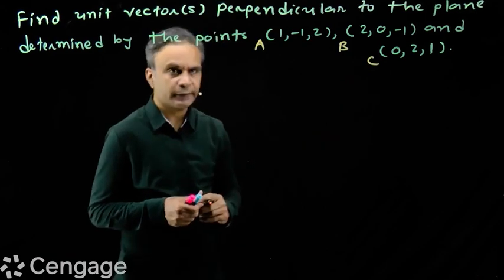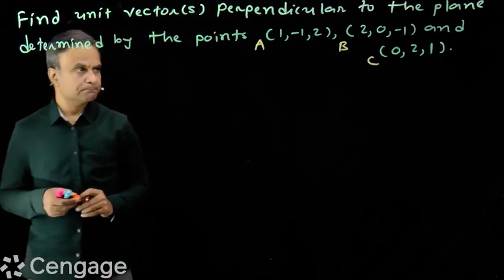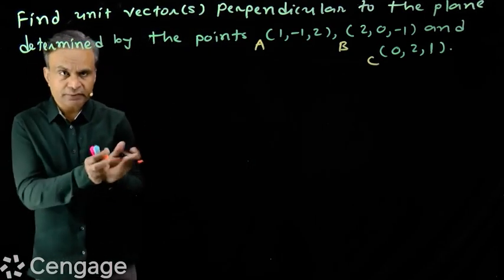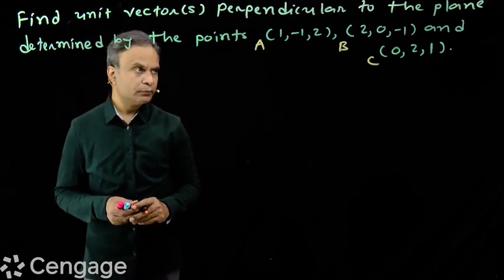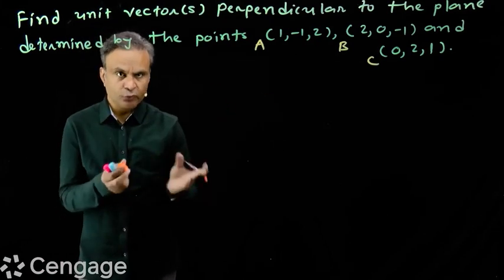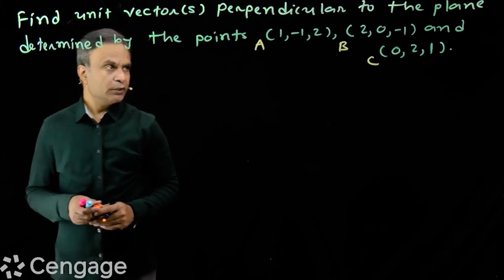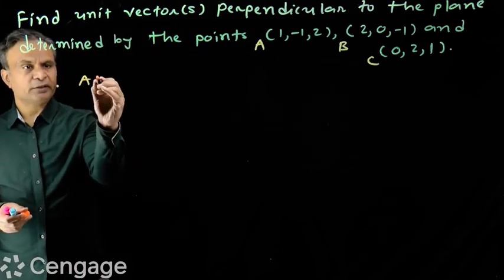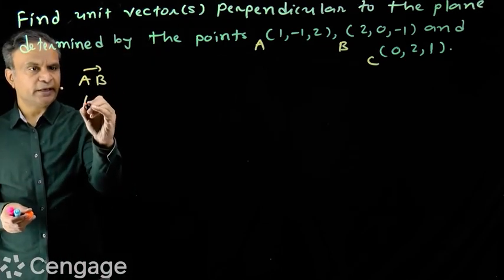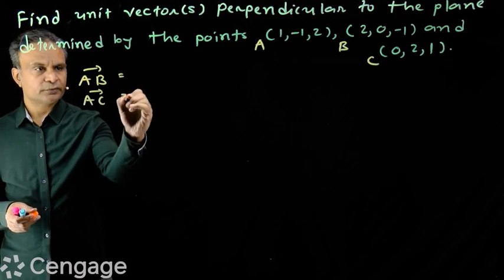Then vectors in the plane will be - we can form two vectors. Vectors in the plane will be AB and AC.